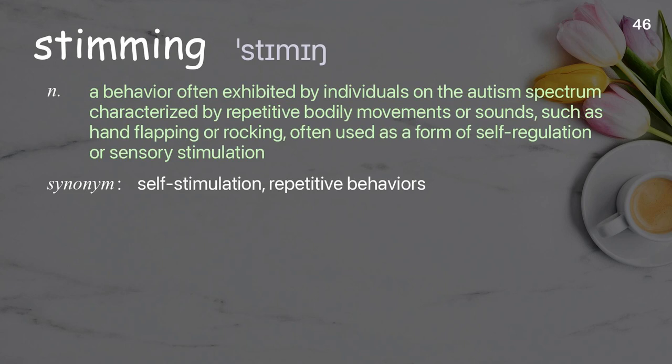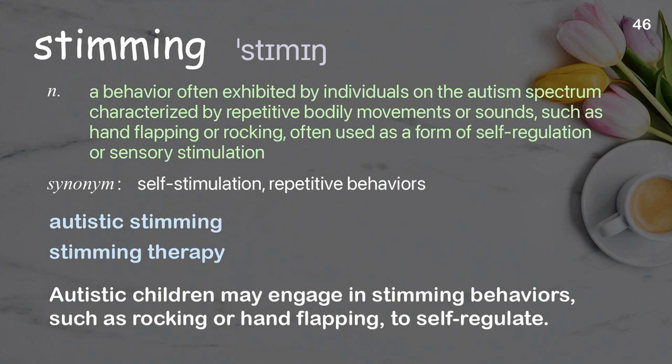Stimming: a behavior often exhibited by individuals on the autism spectrum, characterized by repetitive bodily movements or sounds, such as hand flapping or rocking, often used as a form of self-regulation or sensory stimulation. Autistic children may engage in stimming behaviors, such as rocking or hand flapping, to self-regulate.